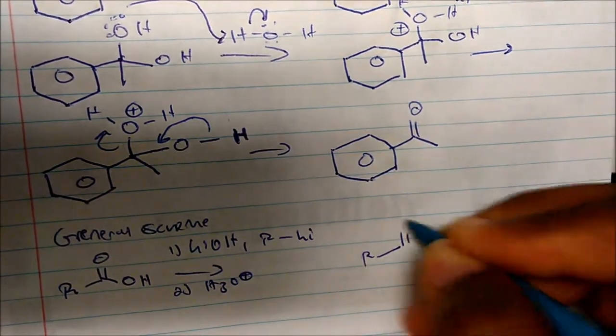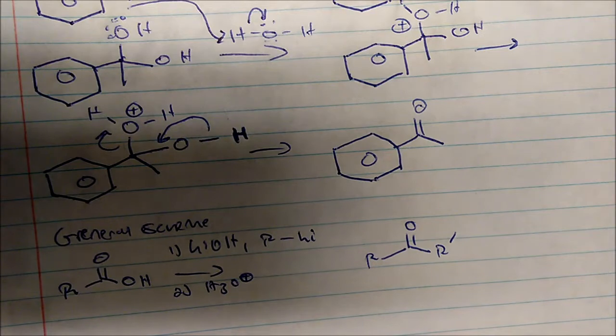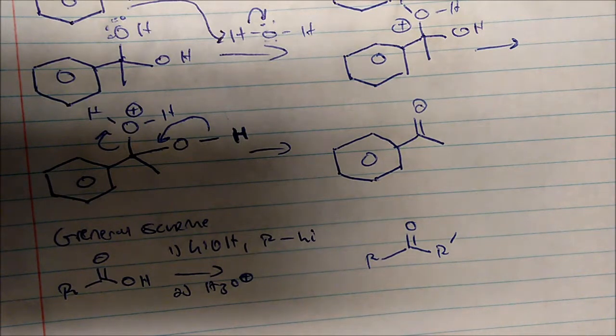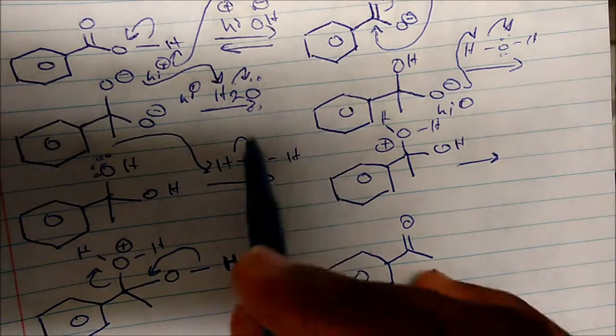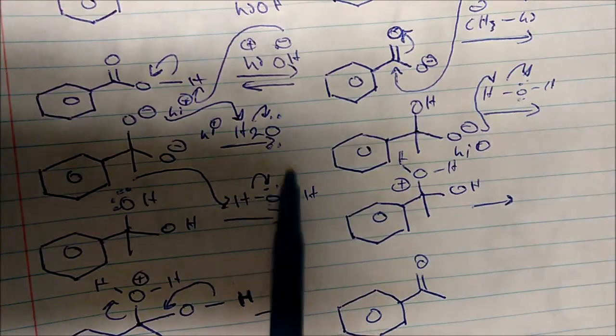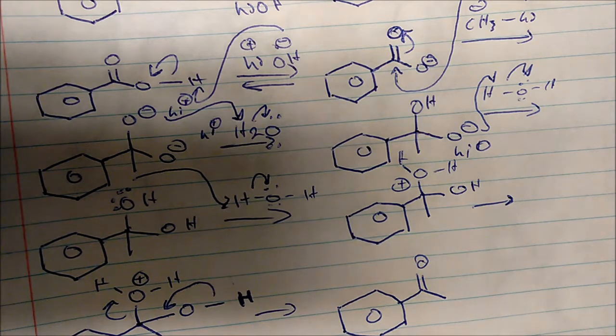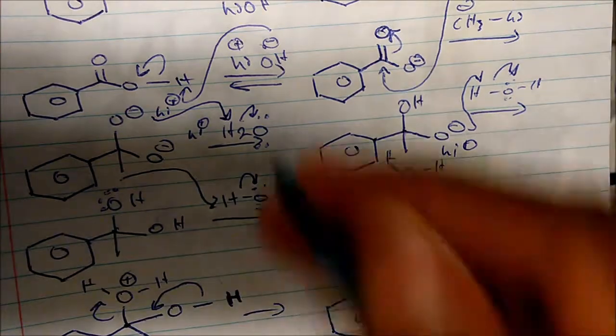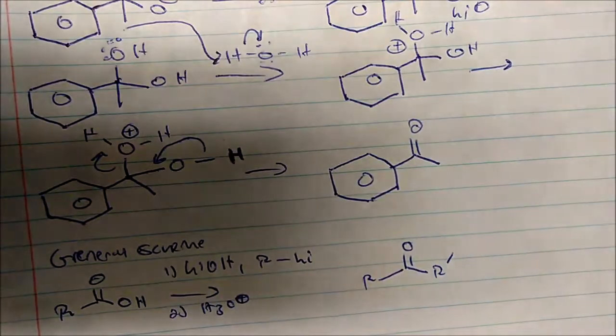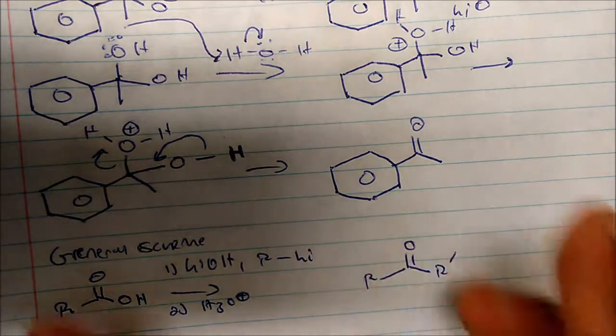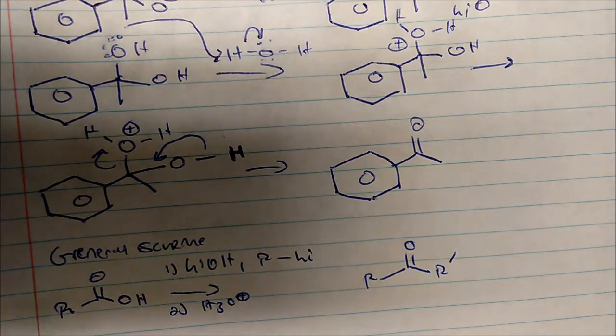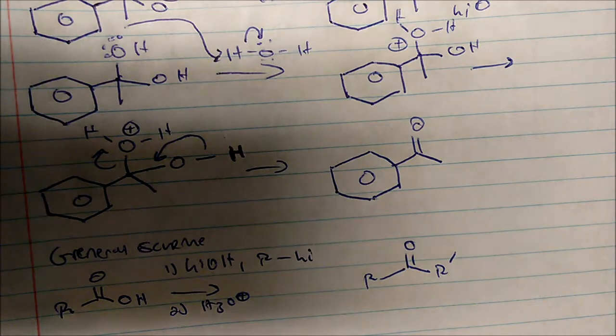And I'll get the R ketone. So that's the general procedure. Notice I use water here instead of acid, but remember, on the basic conditions, water is acidic. So the general procedure is to use acid, H3O+, but again, either works. So you could go with the acid, it doesn't matter. But this is a general scheme, take lithium hydroxide and some sort of R lithium and an acid, and I get a ketone from it.